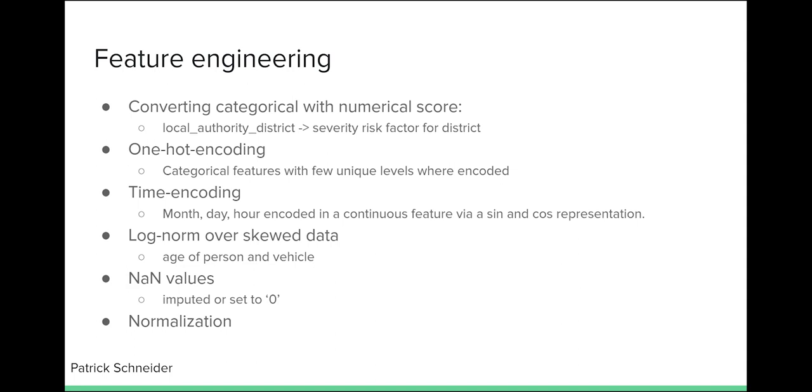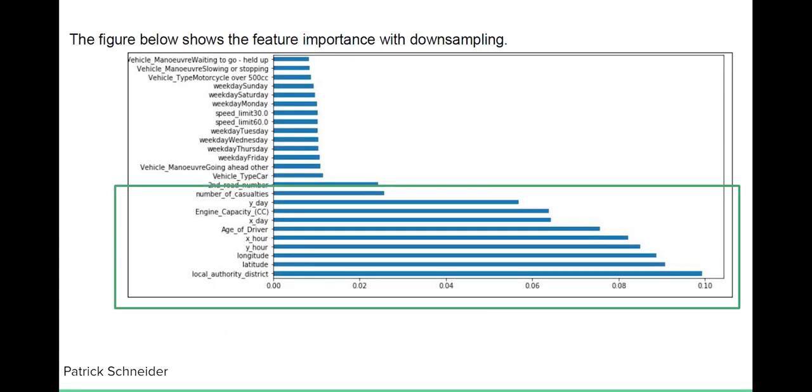The feature importance analysis showed that the local authority district risk factor was a significant predictor for severity. It is followed by the location with longitude and latitude. The sin-cosine time encoding of the hour took third place. The age of the driver, as well as the engine capacity, are features that we received based on the 1-to-N dataset join approach. While this was a nice outcome of the chosen approach, more improvements can be made.